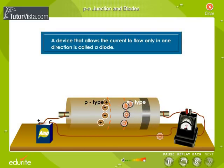A device that allows the current to flow only in one direction is called a diode. Thus, P-N junction can be described as a diode.